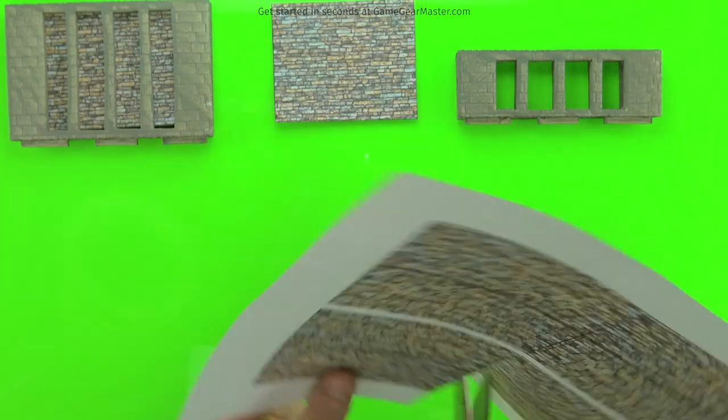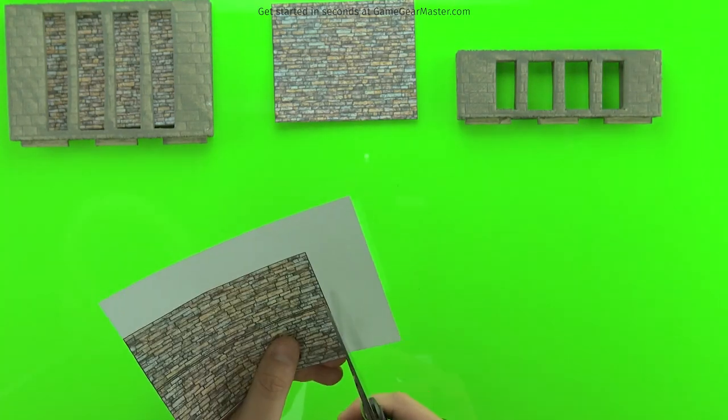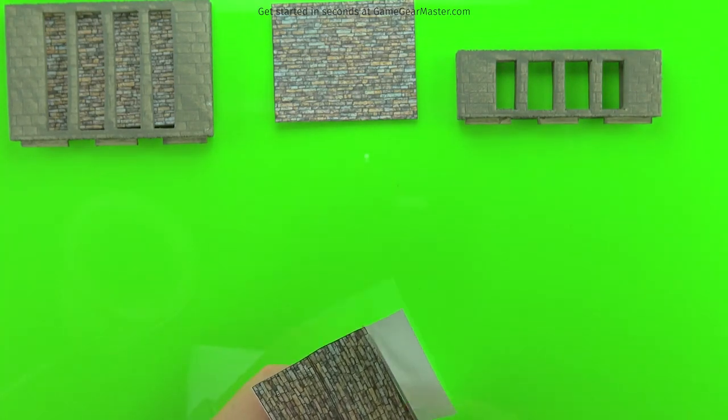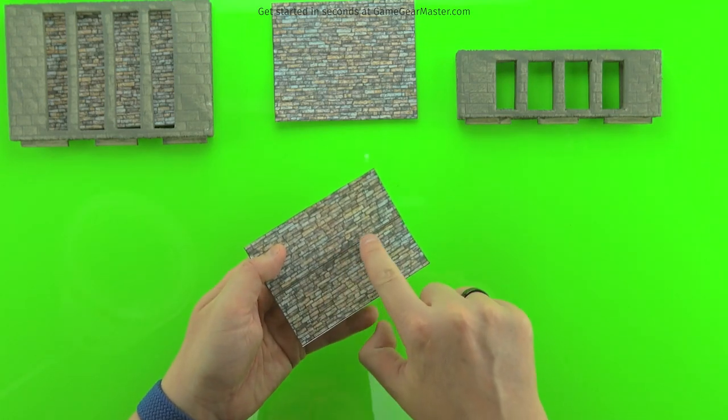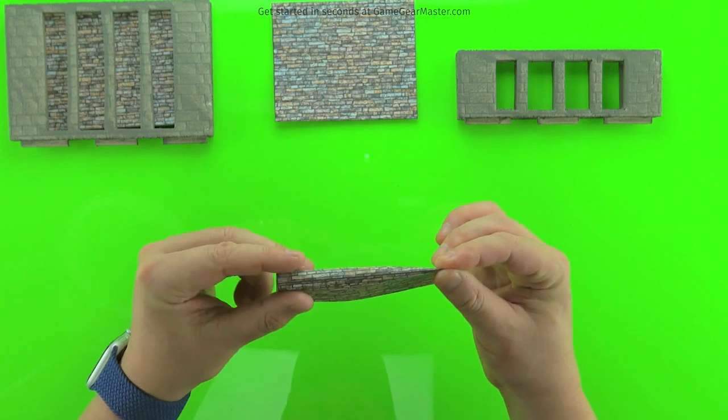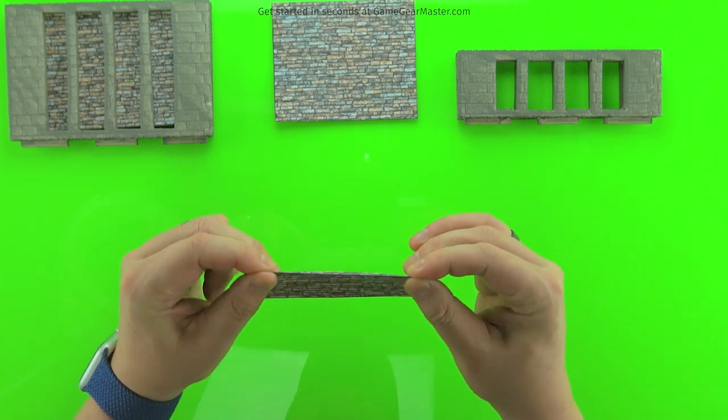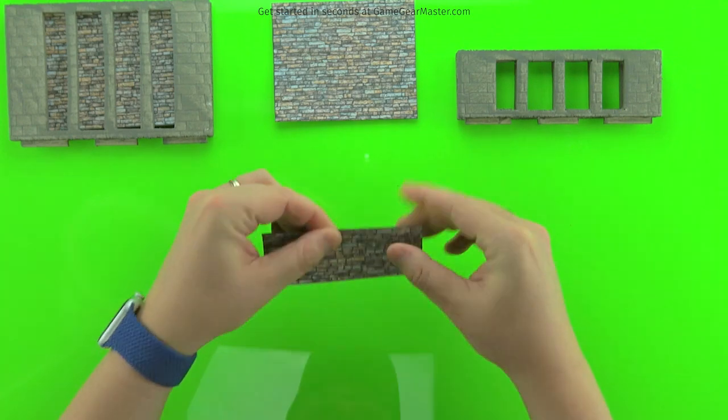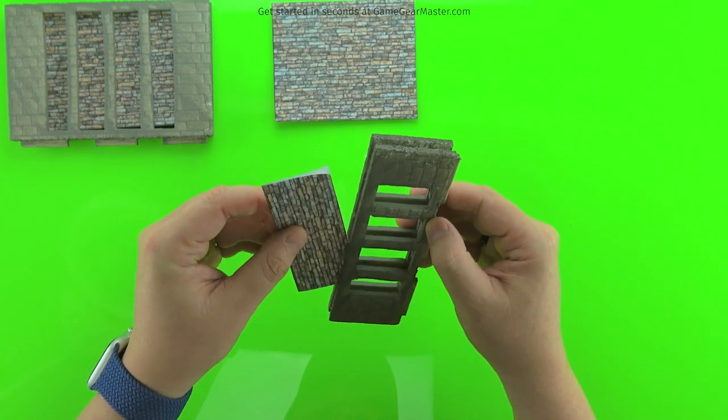And it's the same procedure for a single height wall. It's just going to be a smaller piece. So there you go. Now you know how to make 75% of the inserts for Terraino castles and catacombs.